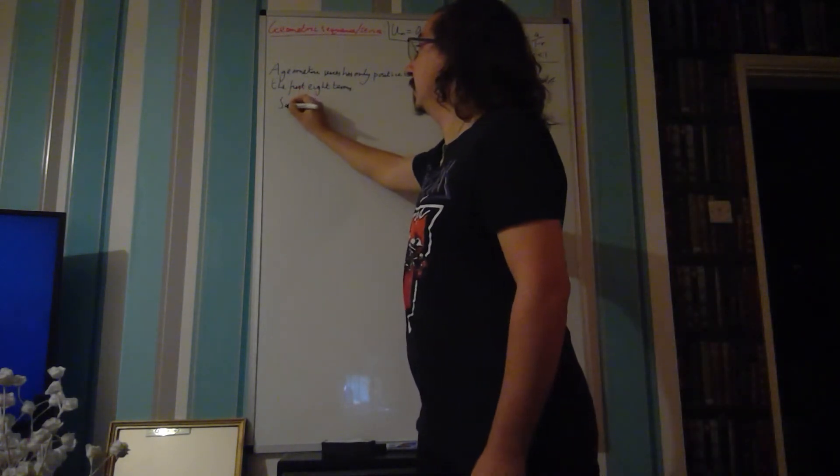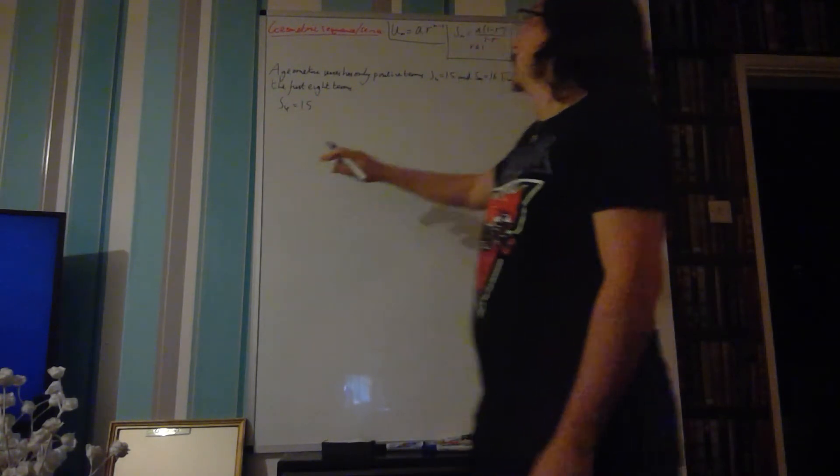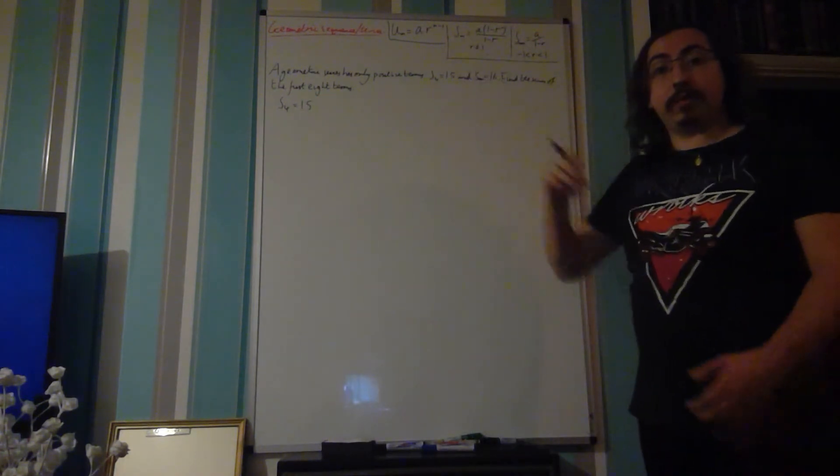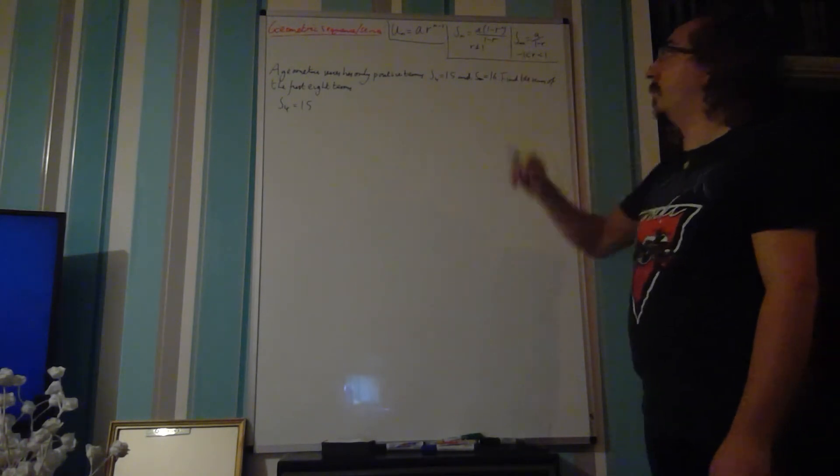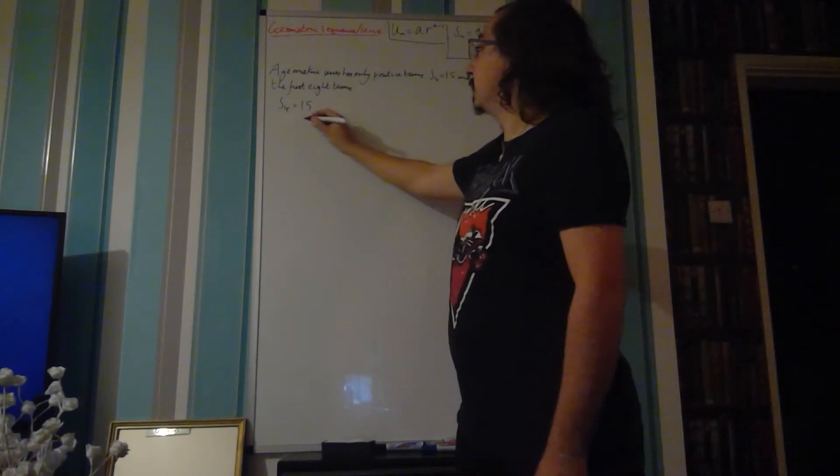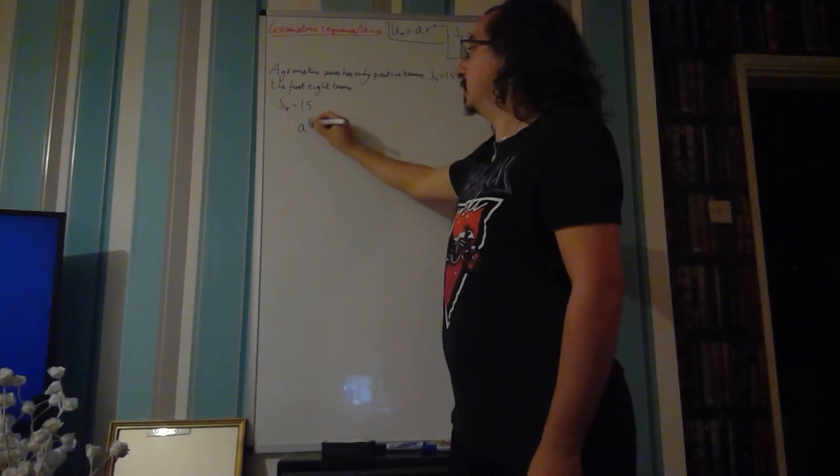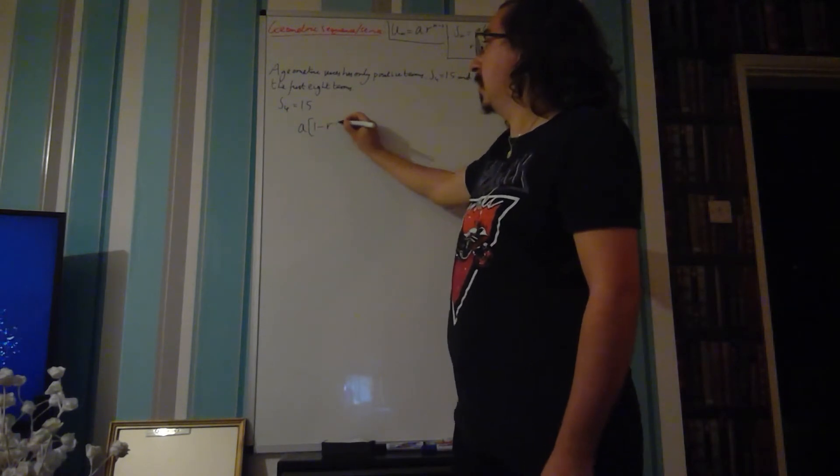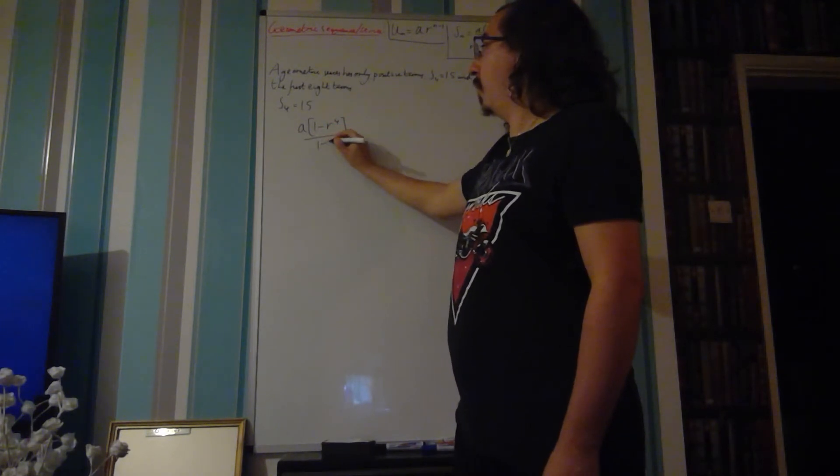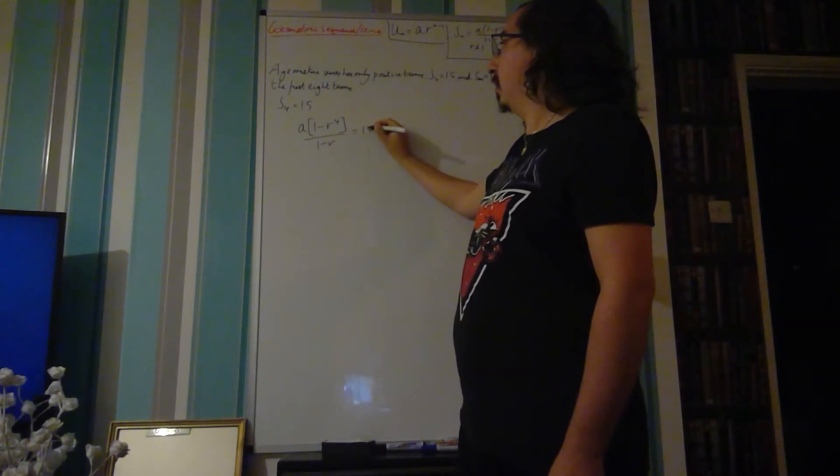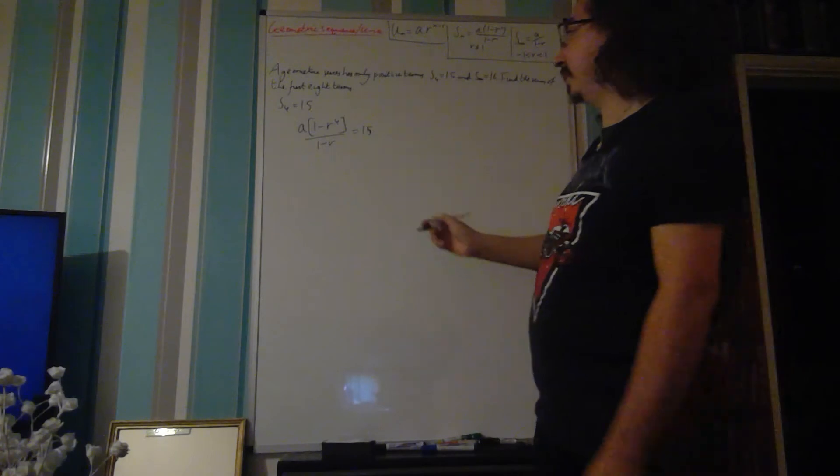The sum of the first four terms is equal to 15. This uses the sum of the first n term formula where we substitute n equals 4. So we have a times 1 minus r to the 4 over 1 minus r, and that's equal to 15. That's going to be equation number 1.